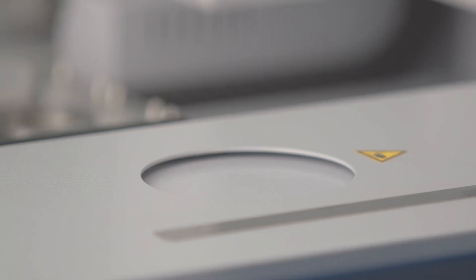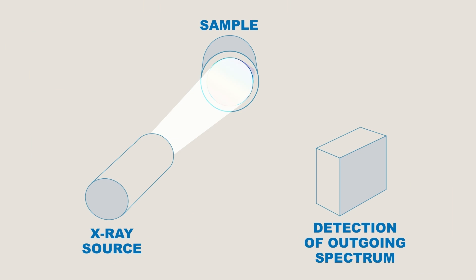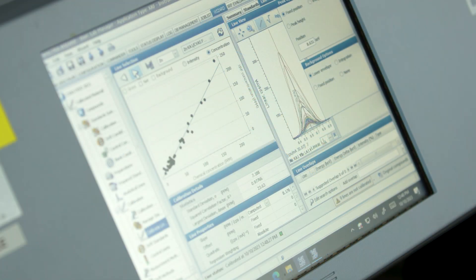Here's how XRF works. The sample is irradiated with X-rays, causing each element to emit its own characteristic radiation. Through this you can identify and quantify a sample's composition by using a calibration.